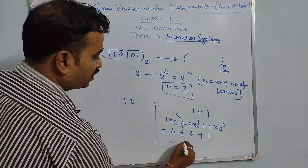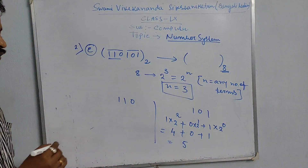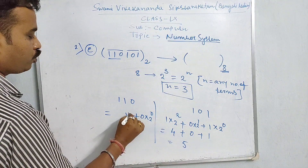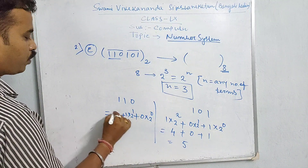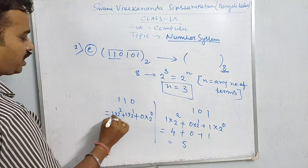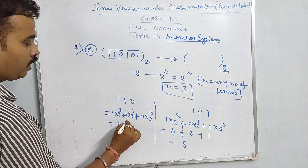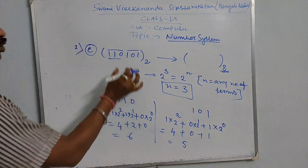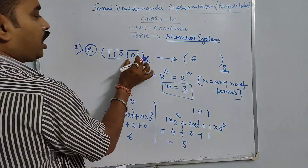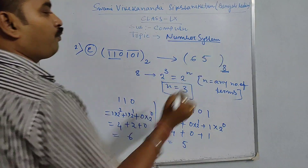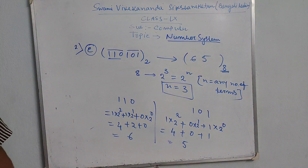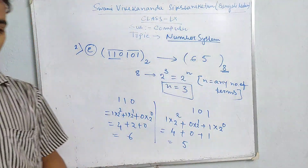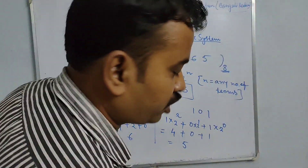We calculate: 0 into 2 to the power 0, plus 1 into 2 to the power 1, plus 1 into 2 squared — that is 4 plus 2 plus 0, that is 6. And 101 gives us 5. This is the conversion — this is the procedure to convert a binary number to an octal number.